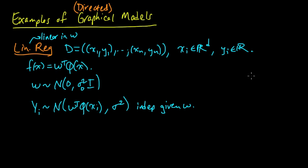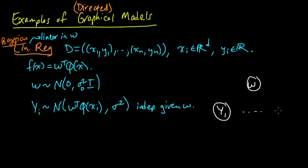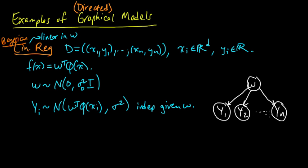This is the linear regression model, and we can draw the graphical model corresponding to this Bayesian linear regression. The graph is: w is some random variable, and then each of the y's — y1 up to yn — is a random variable. They're conditionally independent given w, so we draw an arrow from w to y_i for each i.